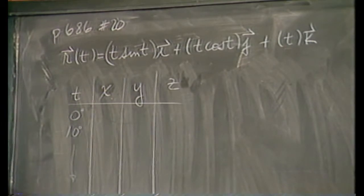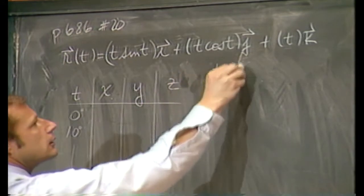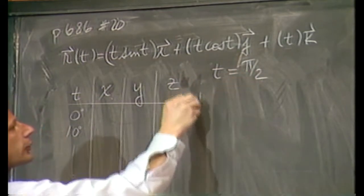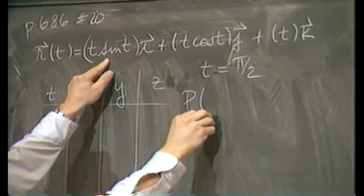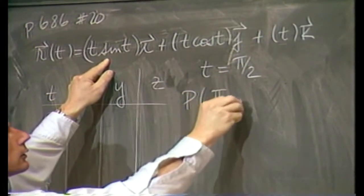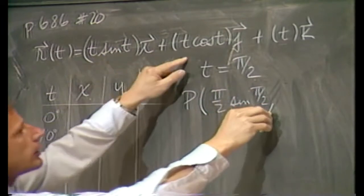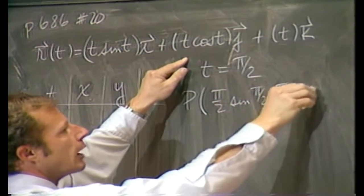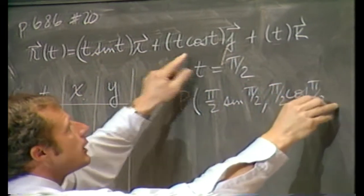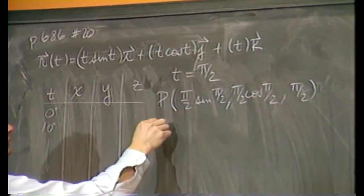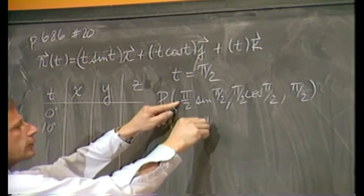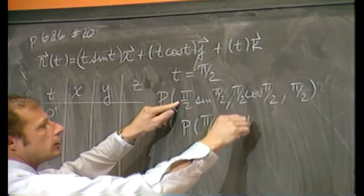What you're supposed to do is eventually hit 90 degrees and at that particular instant, the point in question would be π/2 sine of π/2 for the x coordinate, π/2 cosine of π/2 for the y and just π/2 for the z. So the point in question is π/2, 0, π/2.